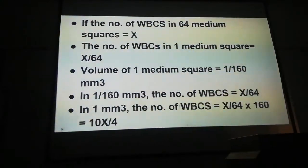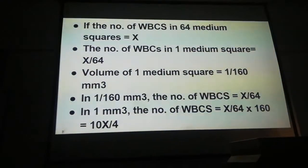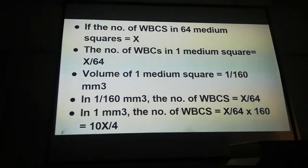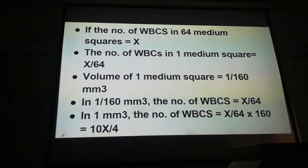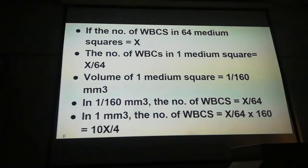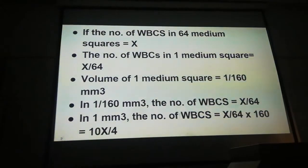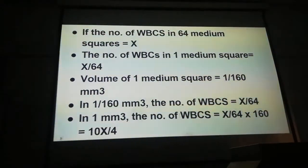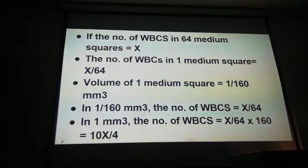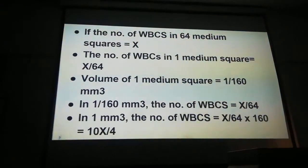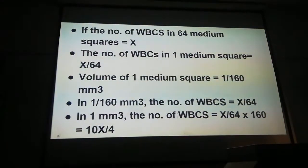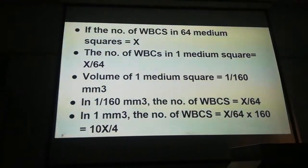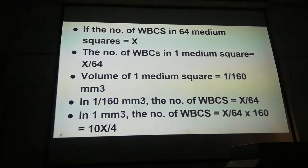Since the number of WBCs in 64 medium squares is x — counted using the Thomas rule of counting — the number of WBCs in 1 medium square is x/64. We know that the volume of 1 medium square is 1/160 mm³, so the number of WBCs in 1 medium square also equals the number of WBCs in 1/160 mm³.